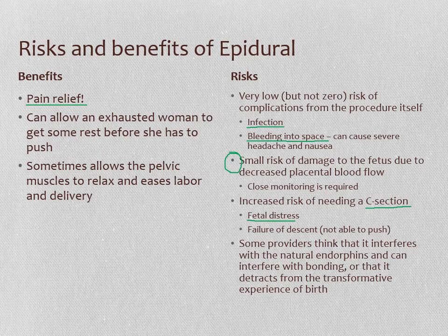Overall, having an epidural increases your risk of needing a c-section. The first reason is fetal distress — if the baby develops signs of trouble as indicated by heart rate, it may not be safe to continue with a vaginal delivery. The other thing is that sometimes people just aren't able to push effectively. If the epidural is a little too dense, or you're too relaxed because you're not in pain, it seems harder to push babies out. This can result in what we call failure of descent, meaning the fetus isn't descending through the pelvis with pushing.